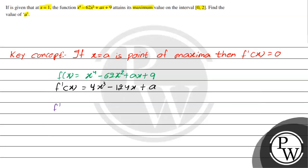So f'(1) = 4 times 1^3 minus 124 times 1 plus a equals 0. This gives us 4 - 124 + a = 0.